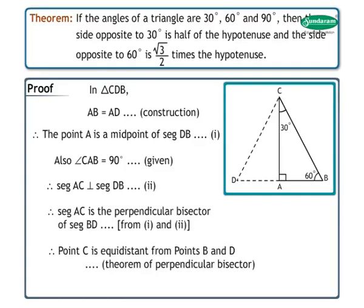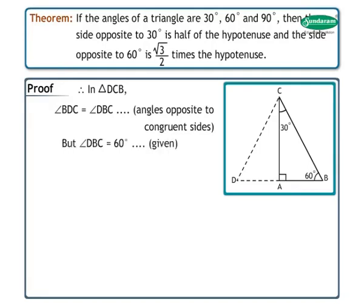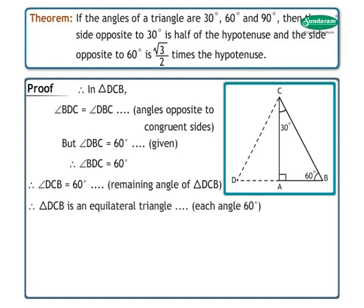Therefore, point C is equidistant from points B and D by the theorem of perpendicular bisector. Therefore, BC is equal to DC. In triangle DCB, angle BDC is equal to angle DBC as they are the angles opposite to congruent sides. But angle DBC is equal to 60 degrees. Therefore, angle BDC is equal to 60 degrees. Therefore, angle DCB is equal to 60 degrees as it is the remaining angle of triangle DCB. Therefore, triangle DCB is an equilateral triangle as each angle is 60 degrees. Therefore, DC is equal to BC is equal to DB. Mark this as statement 3.